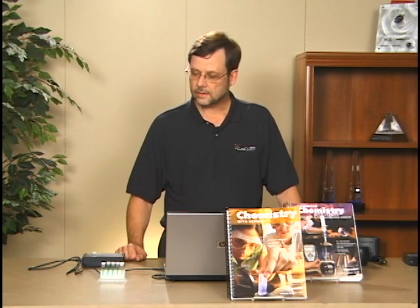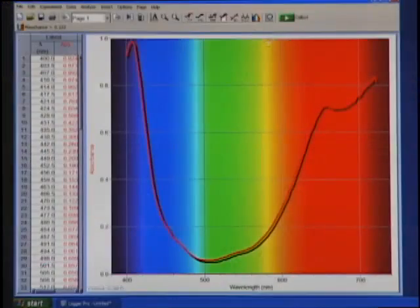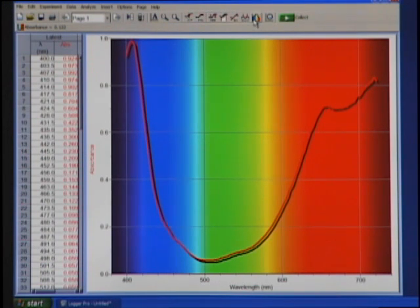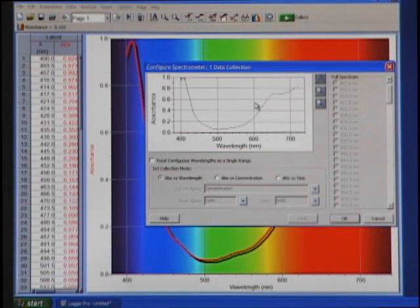Now what I want to do is change to a different mode of data collection. This mode that I'm currently using is called full spectrum, and I want to change to something in Vernierland that we call events with entry. Events with entry just lets me put in these five samples and take readings at my own pace and not have to do that against the clock. To access that mode, I'm going to go up to the left of the Collect button over to where I see the Configure Spectrometer icon, and I'm going to click on that.